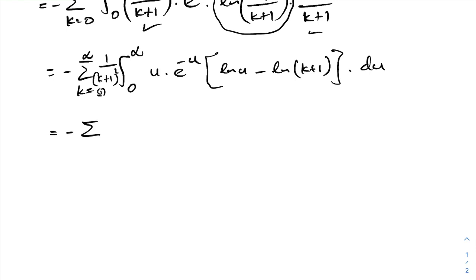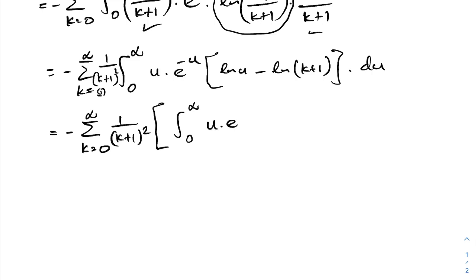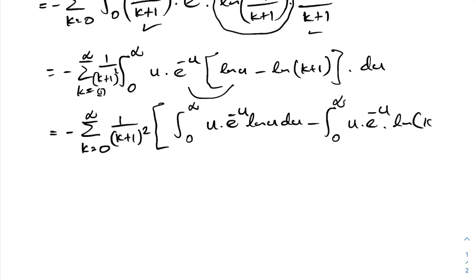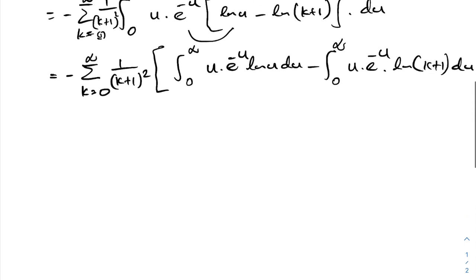We now have two integrals: minus sum from k equals 0 to infinity of 1 over (k plus 1) squared, times the integral from 0 to infinity of u times e to the minus u times natural log of u, du; minus the integral from 0 to infinity of u times e to the minus u times natural log of (k plus 1), du, times natural log of (k plus 1).